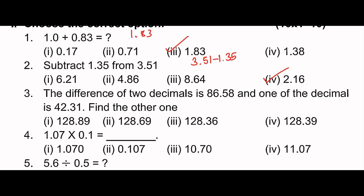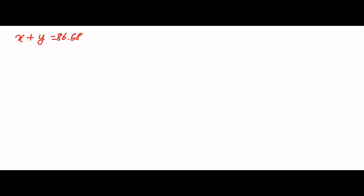One number is 42.31. So y equals 42.31. Now x plus 42.31 equals 86.58. To find x, we calculate 86.58 minus 42.31.